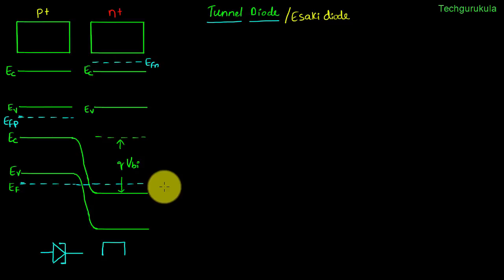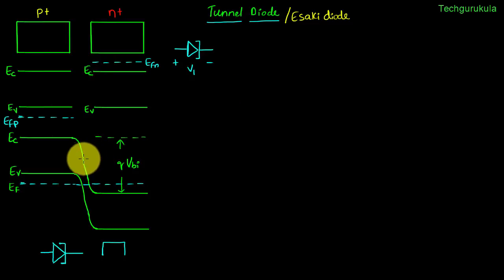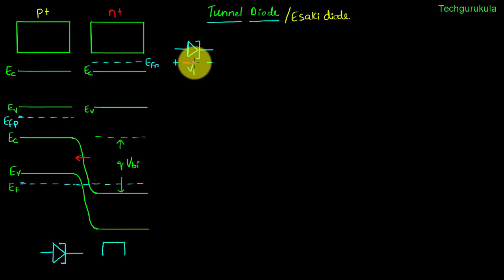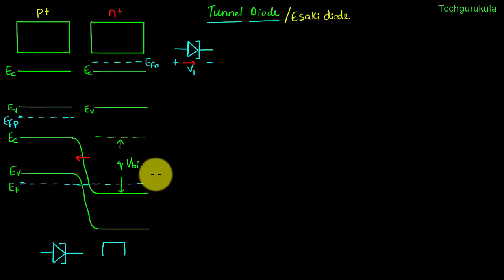Now I am going to apply some small forward bias to this tunnel diode — let's say the voltage is V1. We know when no potential difference is applied there is a built-in electric field from n-side to p-side inside the depletion region. Because of the applied potential V1, the electric field would be in the opposite direction, so the net electric field in the depletion region would decrease. As a result the depletion width would also decrease, and even the barrier potential would decrease. This means the n-side energy band should move up and the p-side energy band should move down.